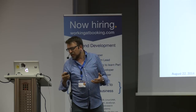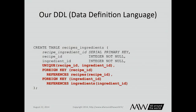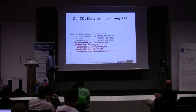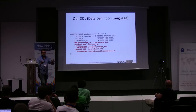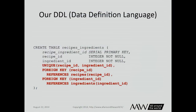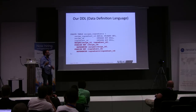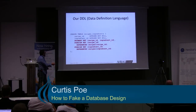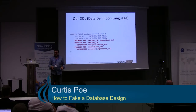Looking at the DDL: we generally have a unique constraint across the recipe and ingredient keys to ensure you don't list eggs 273 times for fettuccine carbonara. We have the foreign keys: recipe_id and ingredient_id. The recipe_ingredient_id is a surrogate key — some people will just use recipe_id and ingredient_id as a compound primary key instead. The SQL lookup becomes a join: SELECT recipe_id, name FROM recipes JOIN recipe_ingredients … JOIN ingredients … WHERE ingredient_name = 'fettuccine'. Very simple and straightforward.